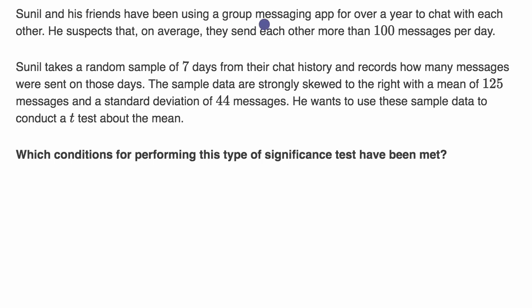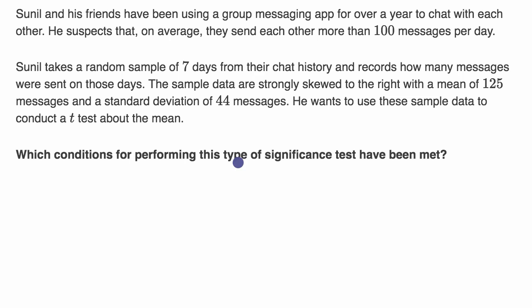Sunil and his friends have been using a group messaging app for over a year to chat with each other. He suspects that, on average, they send each other more than 100 messages per day. Sunil takes a random sample of seven days from their chat history and records how many messages were sent on those days. The sample data are strongly skewed to the right with a mean of 125 messages and a standard deviation of 44 messages. He wants to use these sample data to conduct a t-test about the mean. Which conditions for performing this type of significance test have been met?